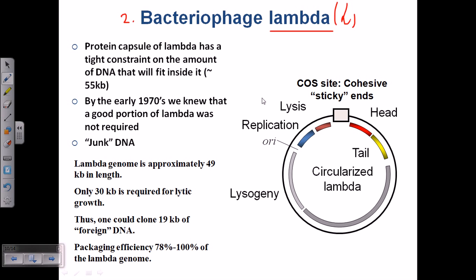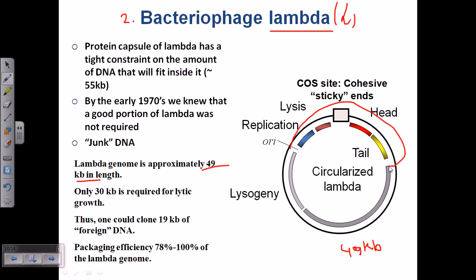The lambda phage vector is utilized. This is the structure of the lambda phage vector — this is actually the normal lambda phage genome. The lambda phage genome is approximately 49 kb in length, but only 30 kb of it is of actual interest. This 30 kb region is actually needed for the lytic growth of the lambda phage.